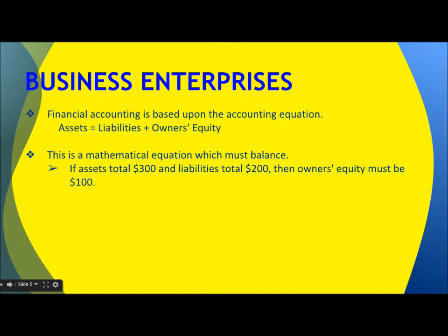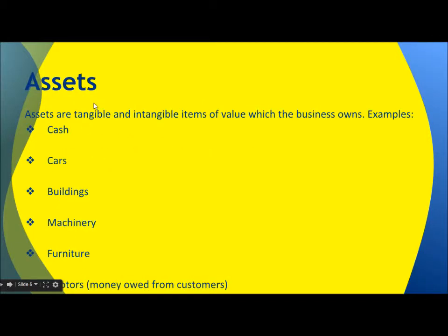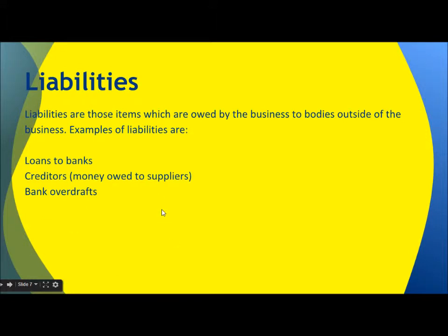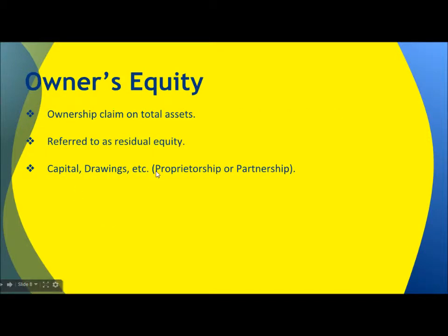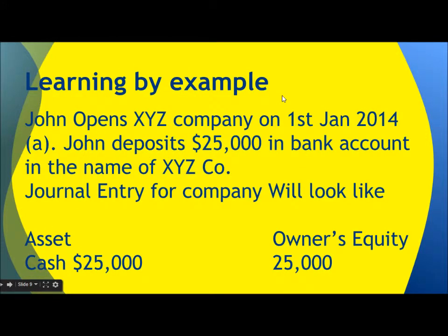Assets are tangible or intangible items of value which the business owns — for example, cash, cars, buildings, machinery, furniture, and money owed from customers. Liabilities are items which the business owes to parties outside the business — such as bank loans, creditors, money owed to suppliers, and bank overdrafts. Owner's equity is the owner's claim on total assets, referred to as residual equity, including capital and drawings.